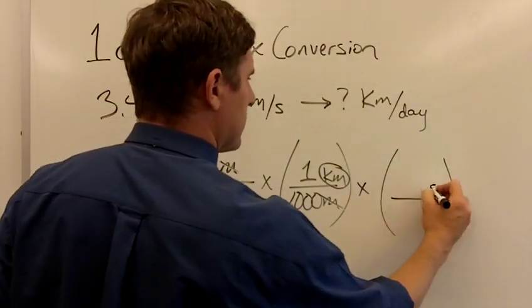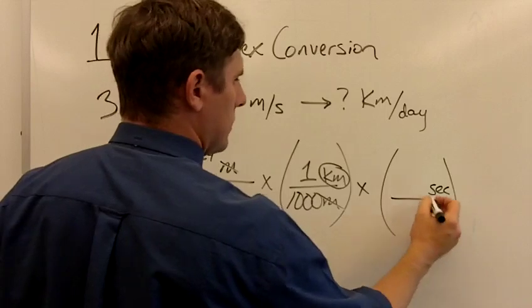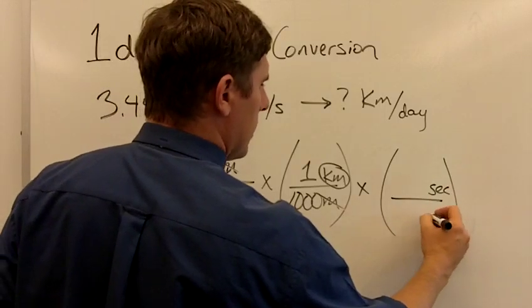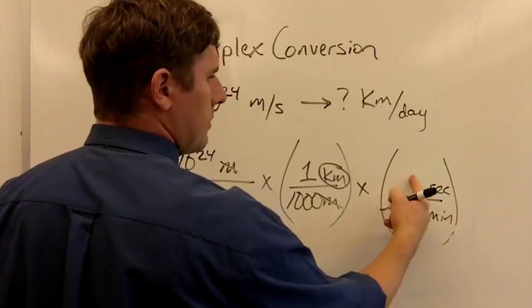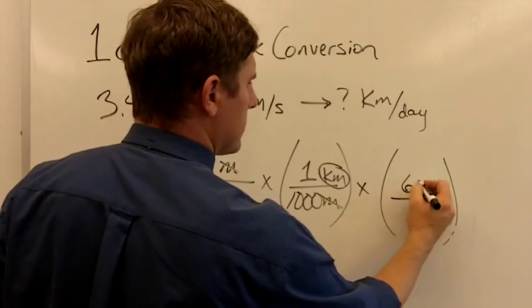So we'll need to put seconds on top so that they cancel, and we'll go seconds to minutes. A minute is bigger, it gets a one. How many seconds are in one minute? 60.